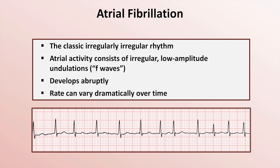AFib can have a rate that varies dramatically over time — sometimes falling into a tachycardic category, sometimes the rate will be normal, and rarely it will be bradycardic. Bradycardic AFib implies severe AV node disease or an excessive dose of a medication that blocks the AV node.